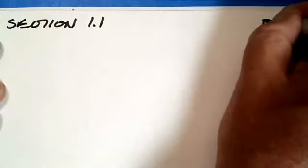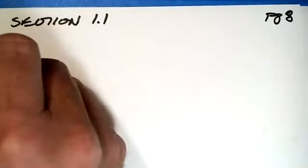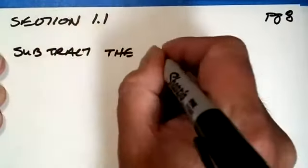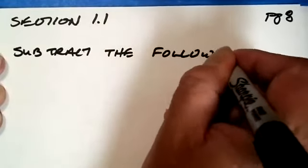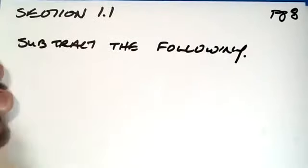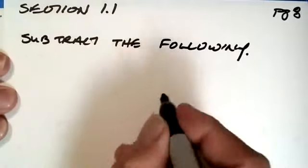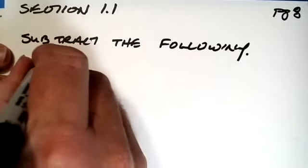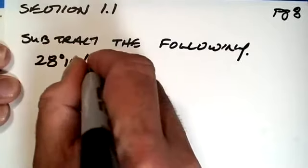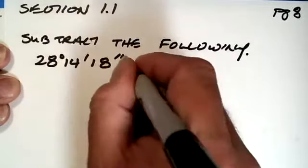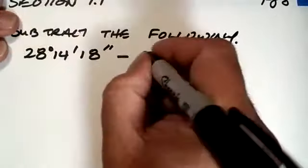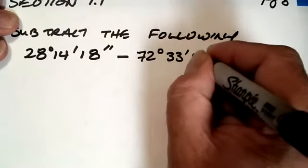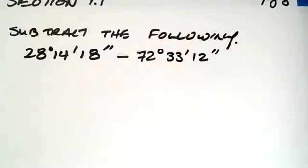Section 1.1, page eight. Subtract the following. Let's say we want to subtract 28 degrees, 14 minutes, 18 seconds, minus 72 degrees, 33 minutes, 12 arc seconds.